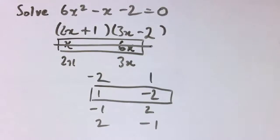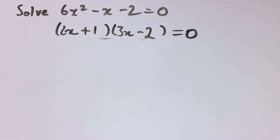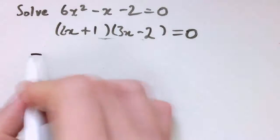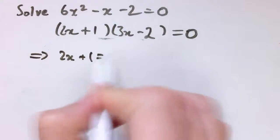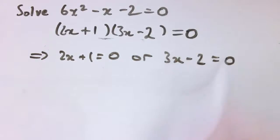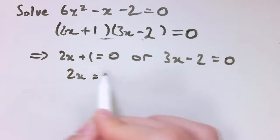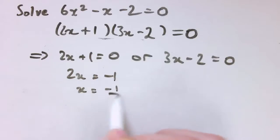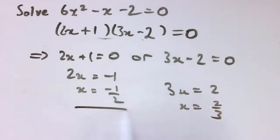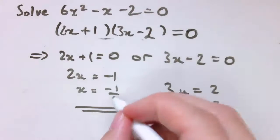A bit more trial and error, but still doable. Setting 2x plus 1 times 3x minus 2 equal to 0 gives us 2x plus 1 equals 0 or 3x minus 2 equals 0. The first gives x equals minus one half; the second gives x equals two thirds. So the two roots are x equals minus one half and x equals two thirds.